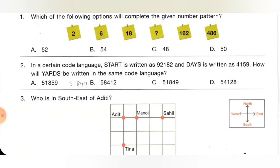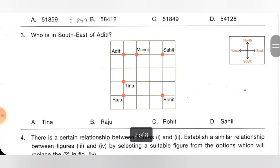Third one: who is in South East of Aditi? Option A: Tina, B: Raju, C: Rohit, D: Shahil. South East of Aditi is Rohit. So option C is the correct answer.